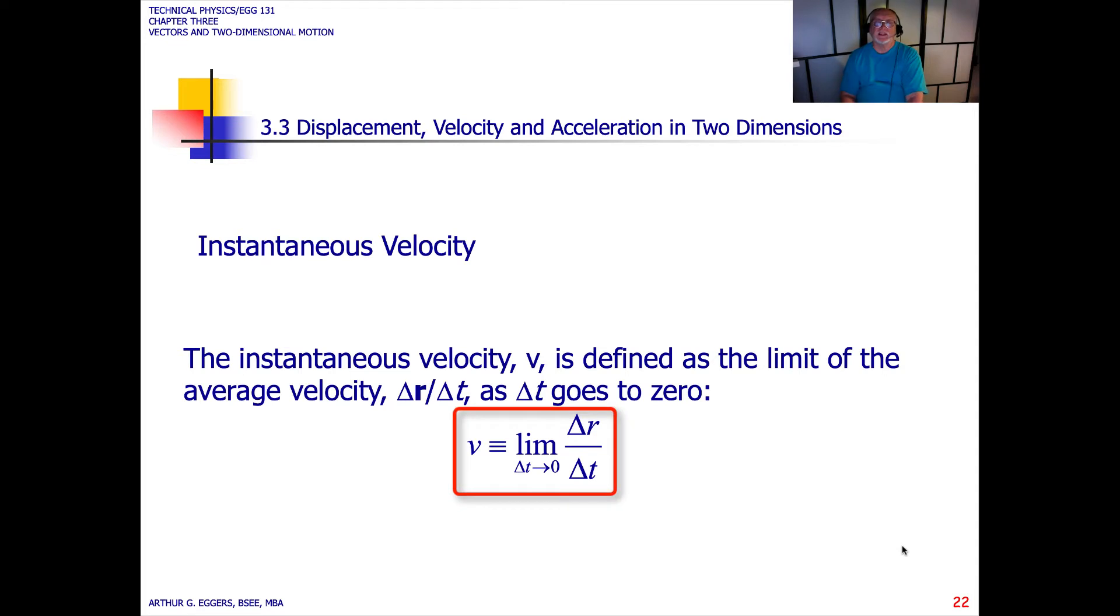Contrasting that, instantaneous velocity is defined as the limit. We go back to this limit concept. This is our introduction to calculus, differential calculus. The limit of the average velocity delta r by delta t as we reduce our time down to zero. Remember, we cut it down, we cut it down, we cut it down until we essentially get a snapshot in time. So we have the instantaneous velocity v with no hat, defined as the limit as the time delta t approaches zero for the change in r over the change in t.